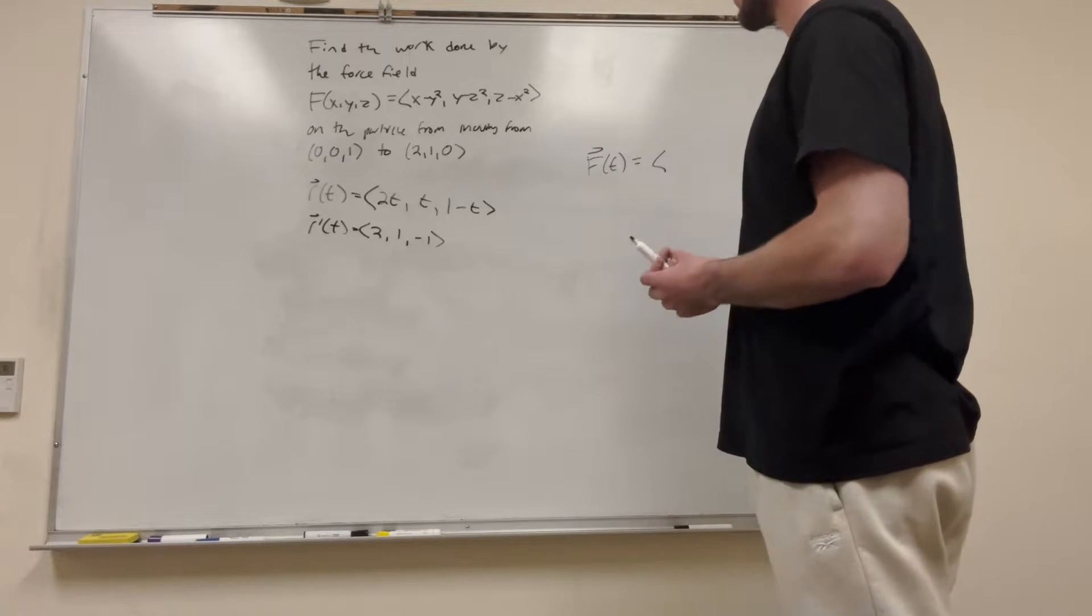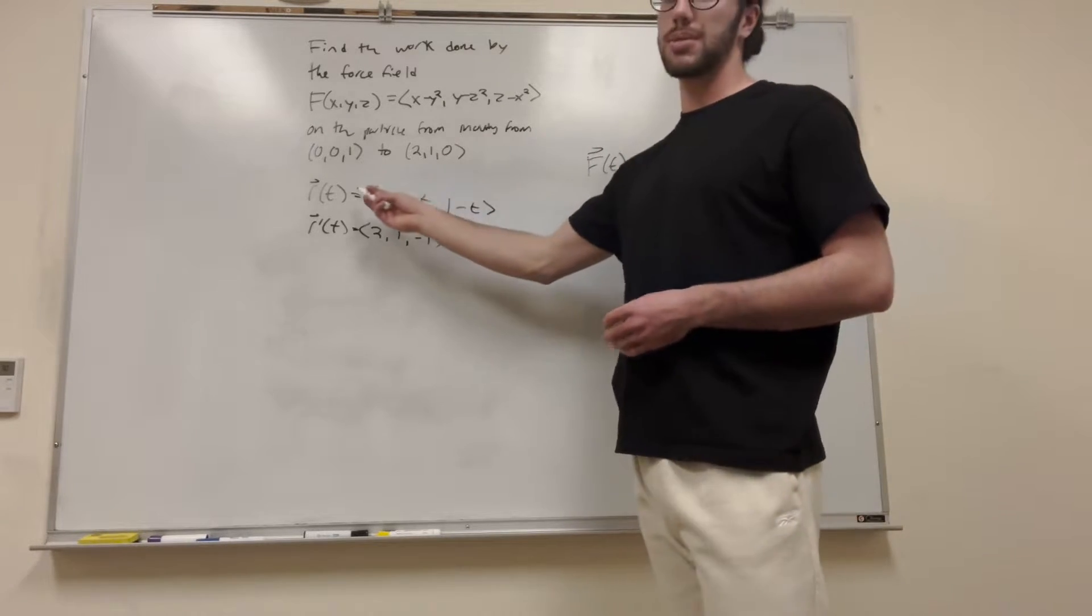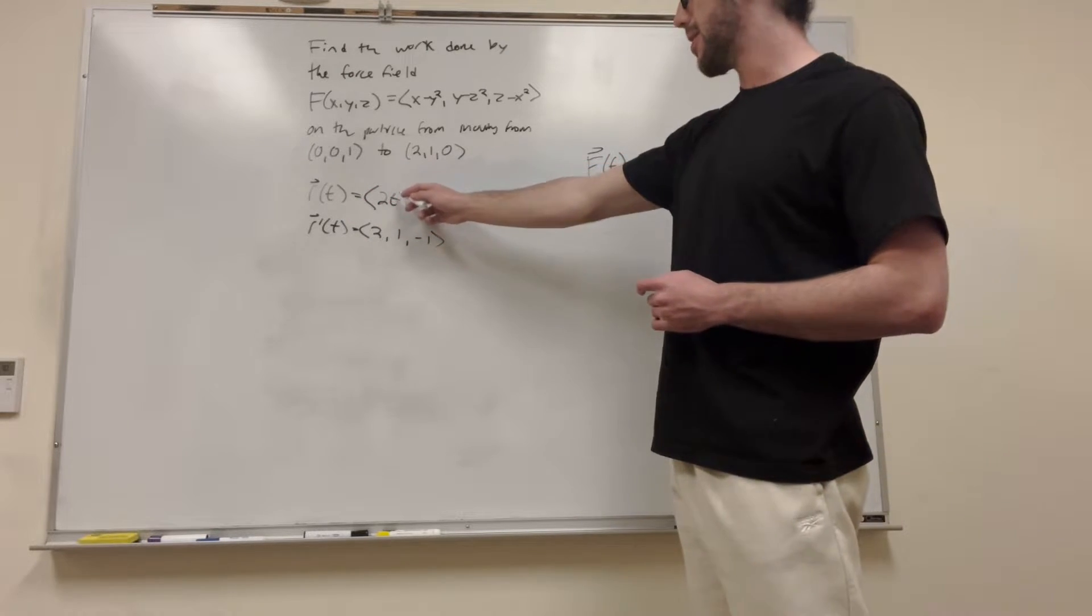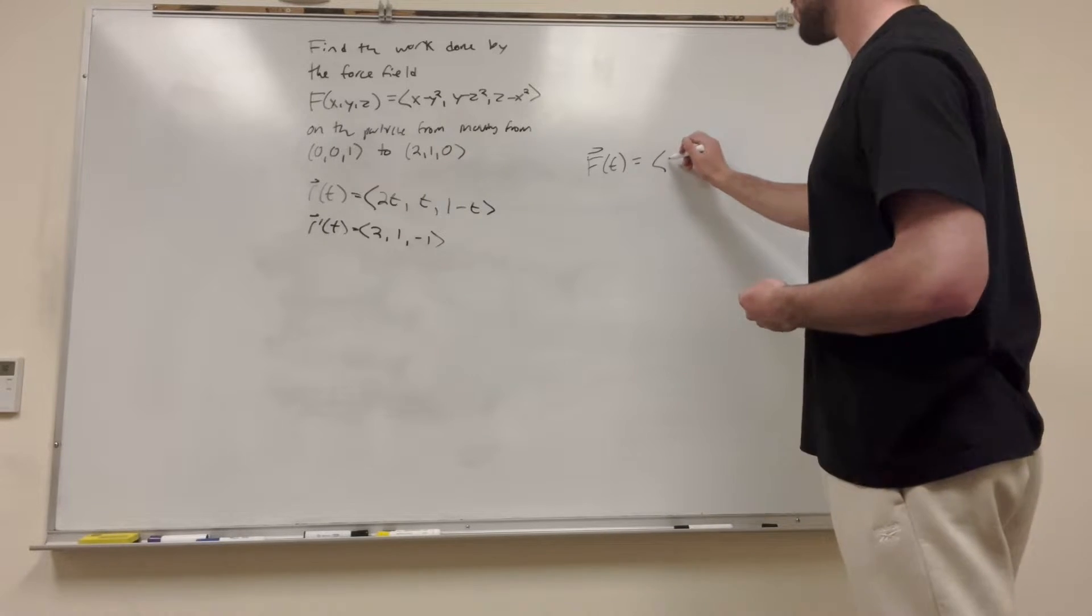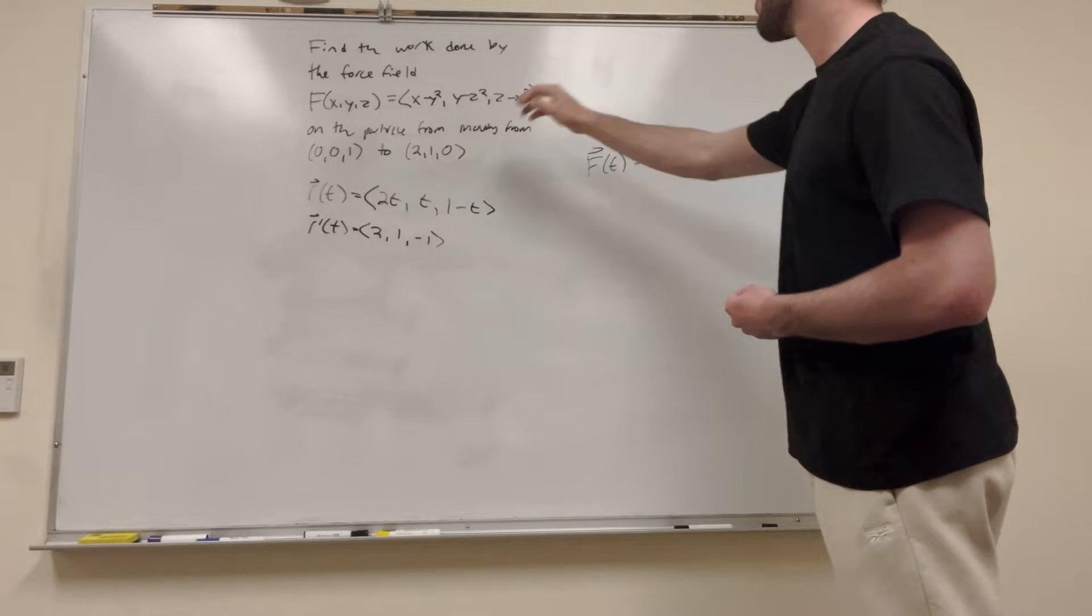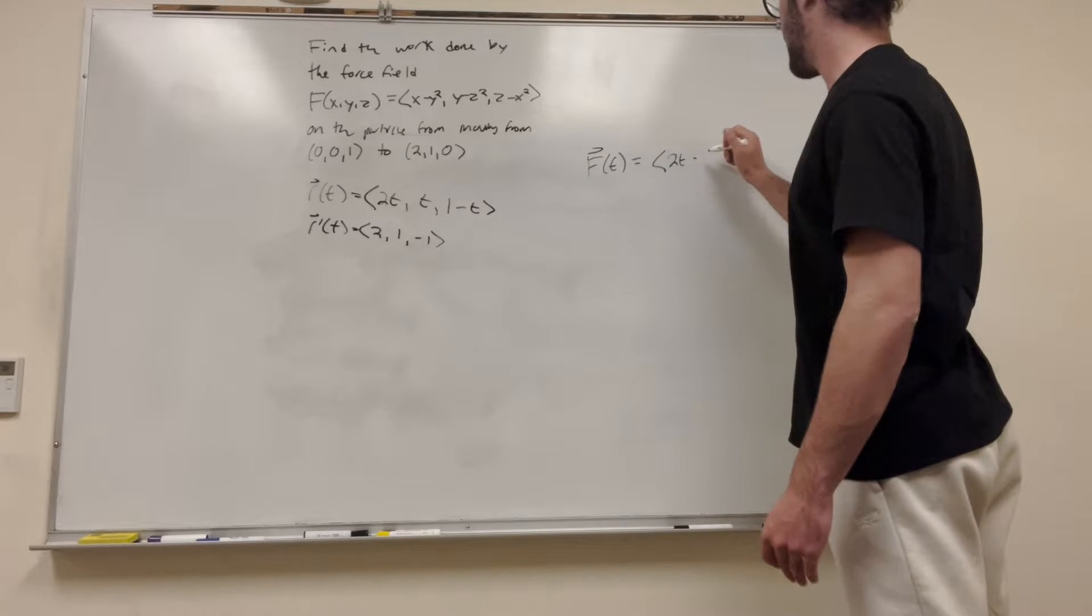F of T is going to look like this. So where do we get X? Well, X can come from our terms here. We said that X is equal to 2T, right? And according to this equation that we just made, so what we can say is it's going to be equal to 2T minus y squared, so y is equal to T. That's going to be minus T squared.